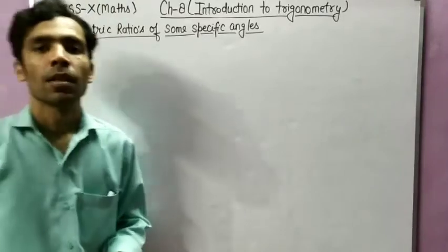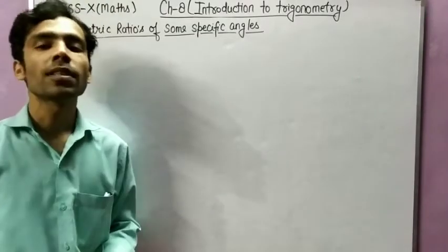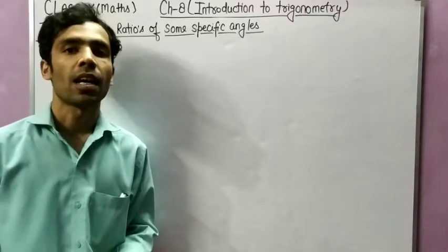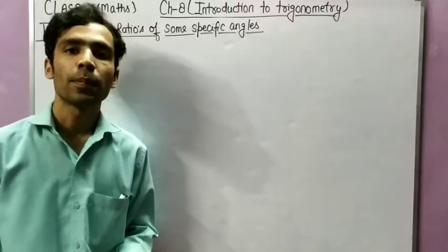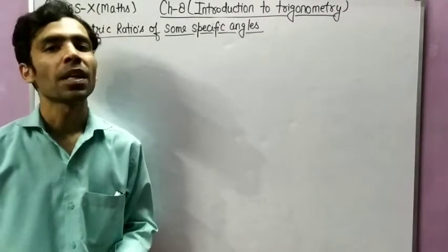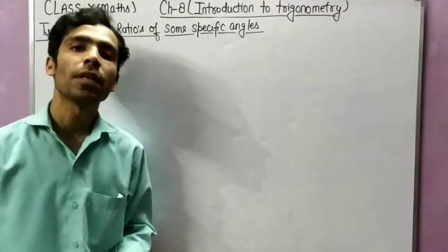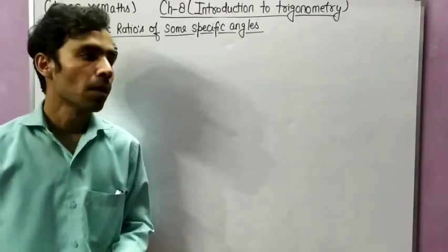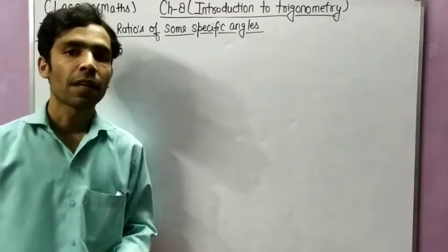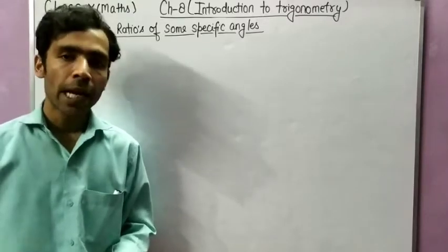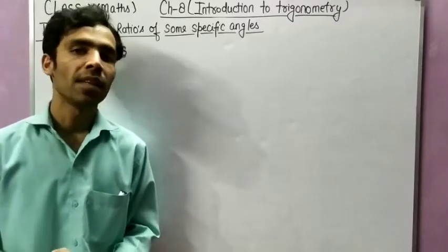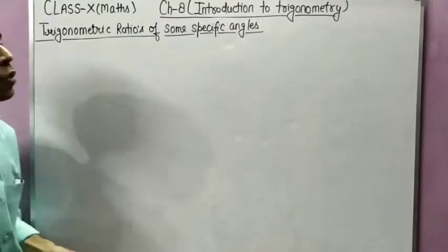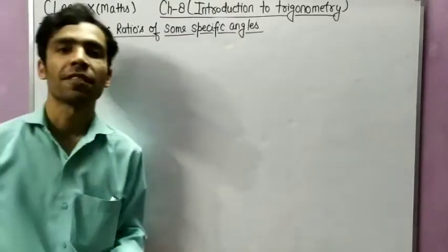Hello students. In the previous part of the video, we discussed exercise 8.1 of chapter 8, which is Introduction to Trigonometry from class 10th. Today we will start a new topic: trigonometric ratios of some specific angles.